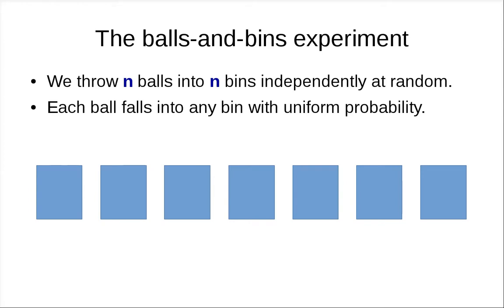We will model this as the balls and bins experiment. We have N bins. These N bins are like the workers. And we have N balls. These balls are like jobs, they model jobs. Our experiment is that we throw these N balls into N bins independently at random. Each ball falls into any bin with uniform probabilities. You can see that this is roughly the same model as the server and the workers discussed before.